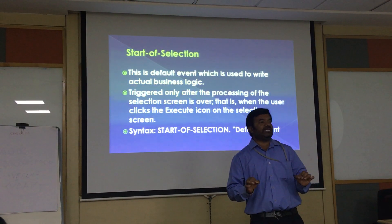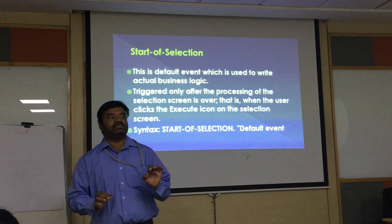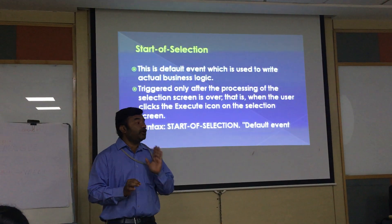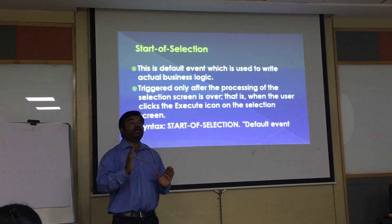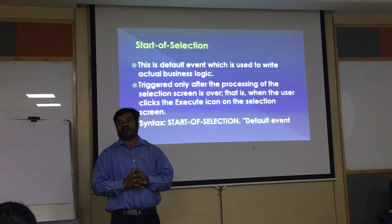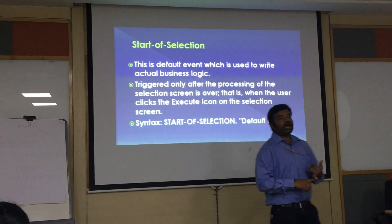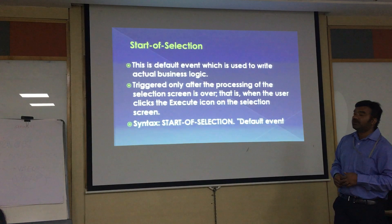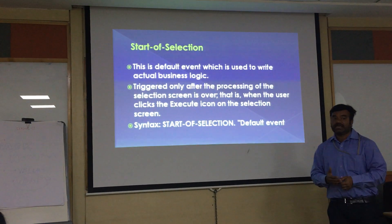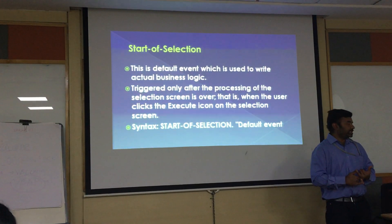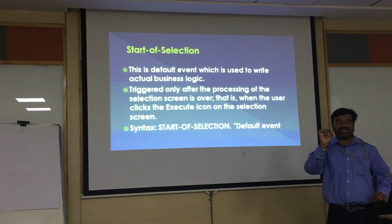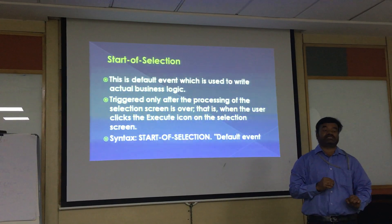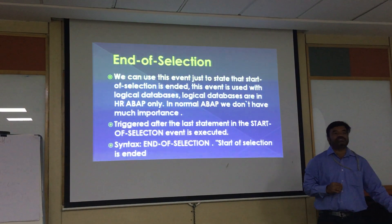START-OF-SELECTION is the default event that gets triggered whenever a program is executed. It is triggered when the program encounters the first SELECT statement in the program. This event is used to write the actual business logic. It is triggered only after the processing of the selection screen is complete — that is, when the user clicks the Execute icon on the selection screen. After the user provides input and executes, START-OF-SELECTION is automatically triggered.